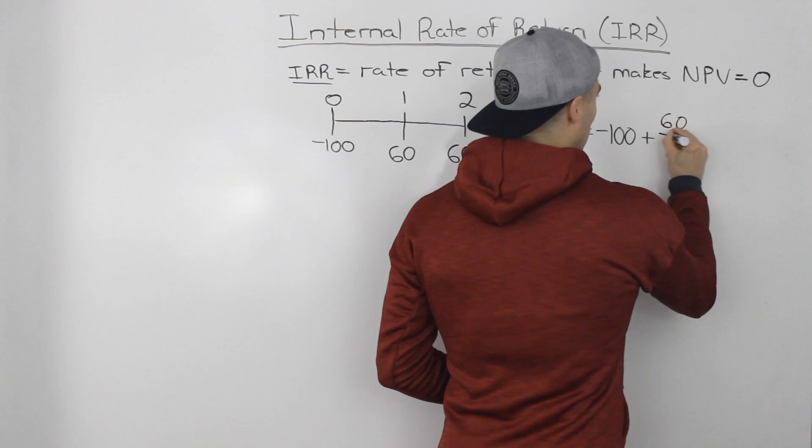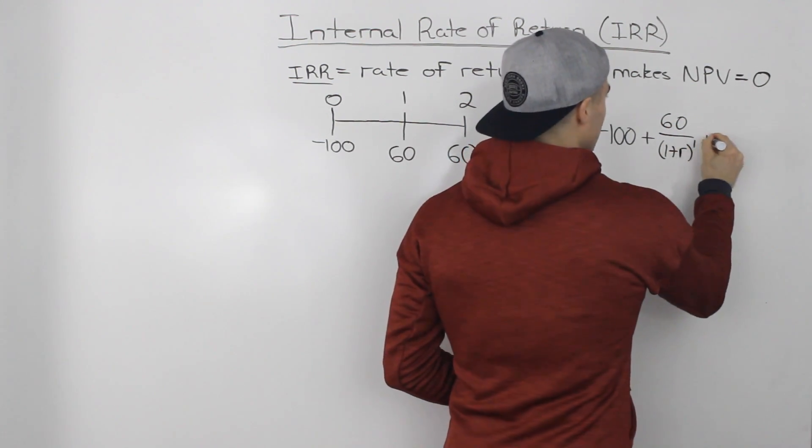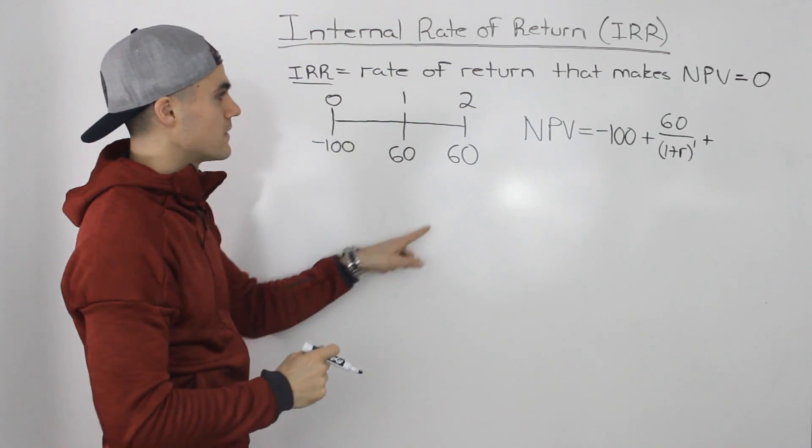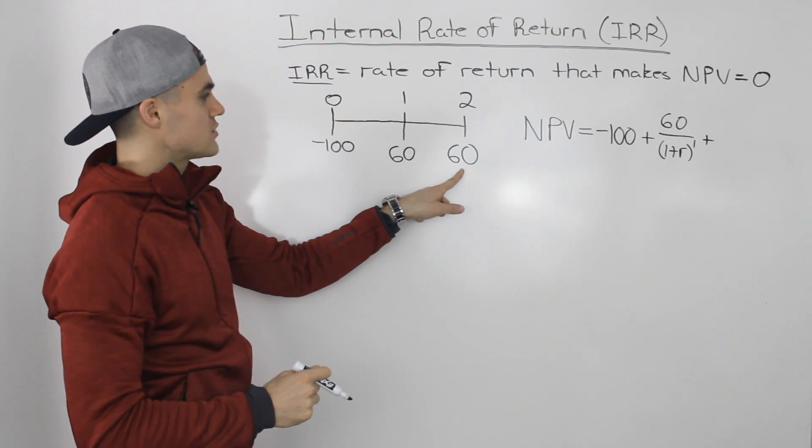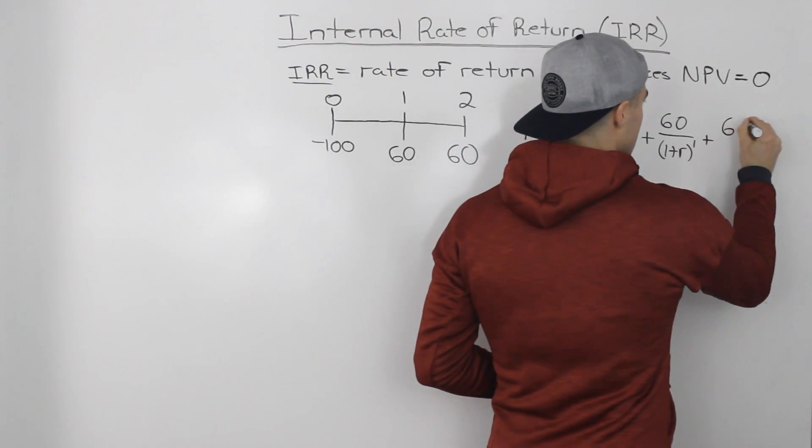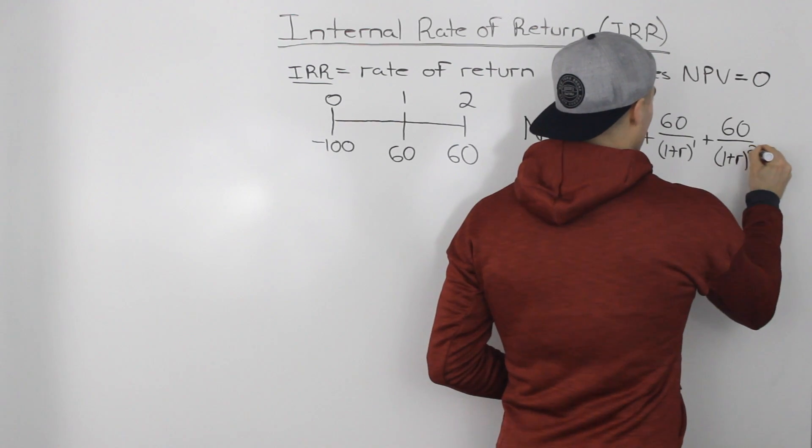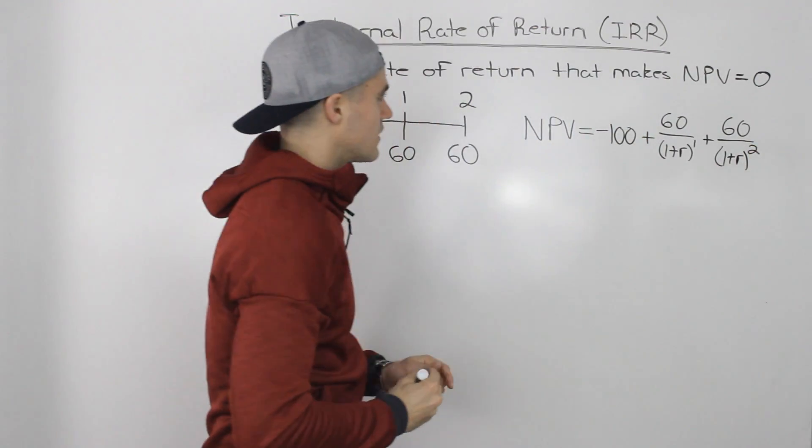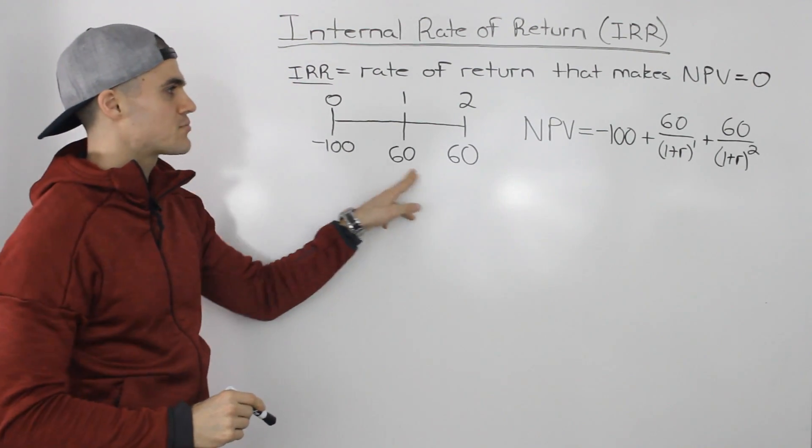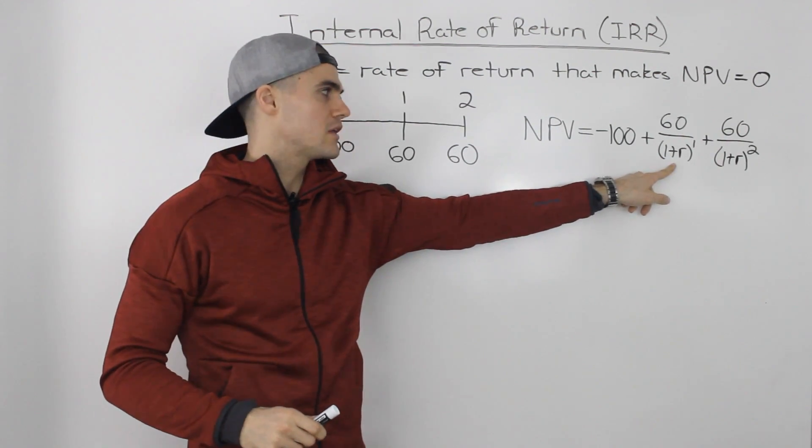So we're going to have 60 over (1 + R) to the power of one because we're discounting that $60 back one year to time zero. Now this $60 in year two we're going to have to discount by two years back to time zero. So we would take the 60 and divide it by (1 + R) squared. So this here represents the general formula for the NPV of this project depending what our required rate of return is. That would be the R value there.